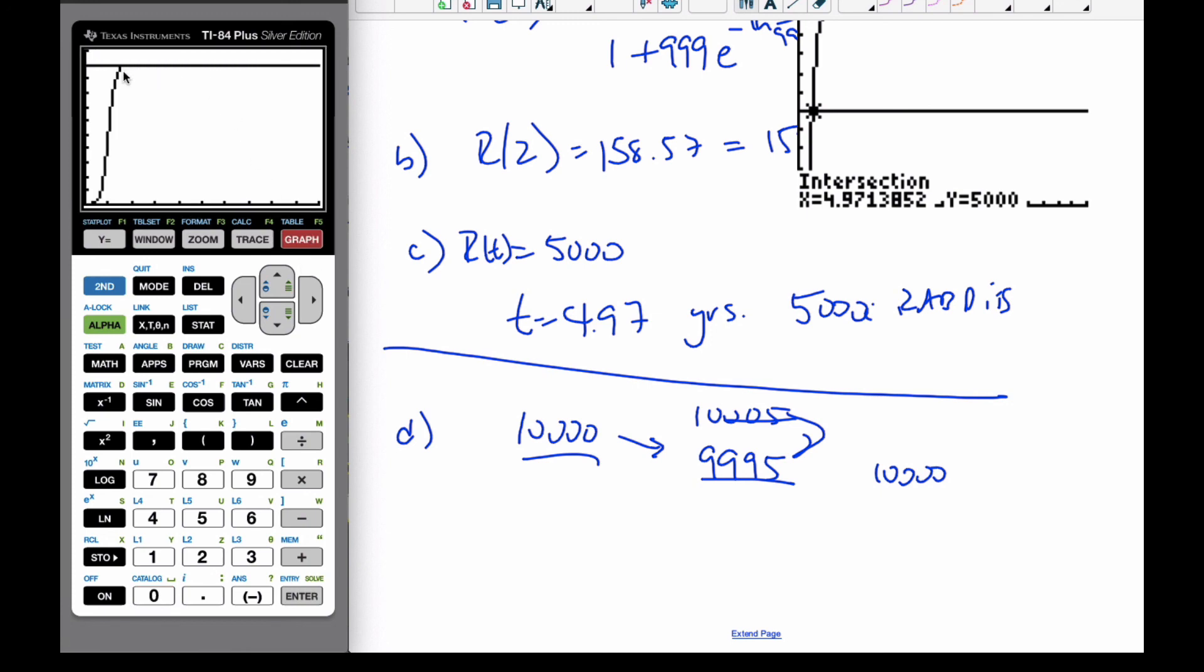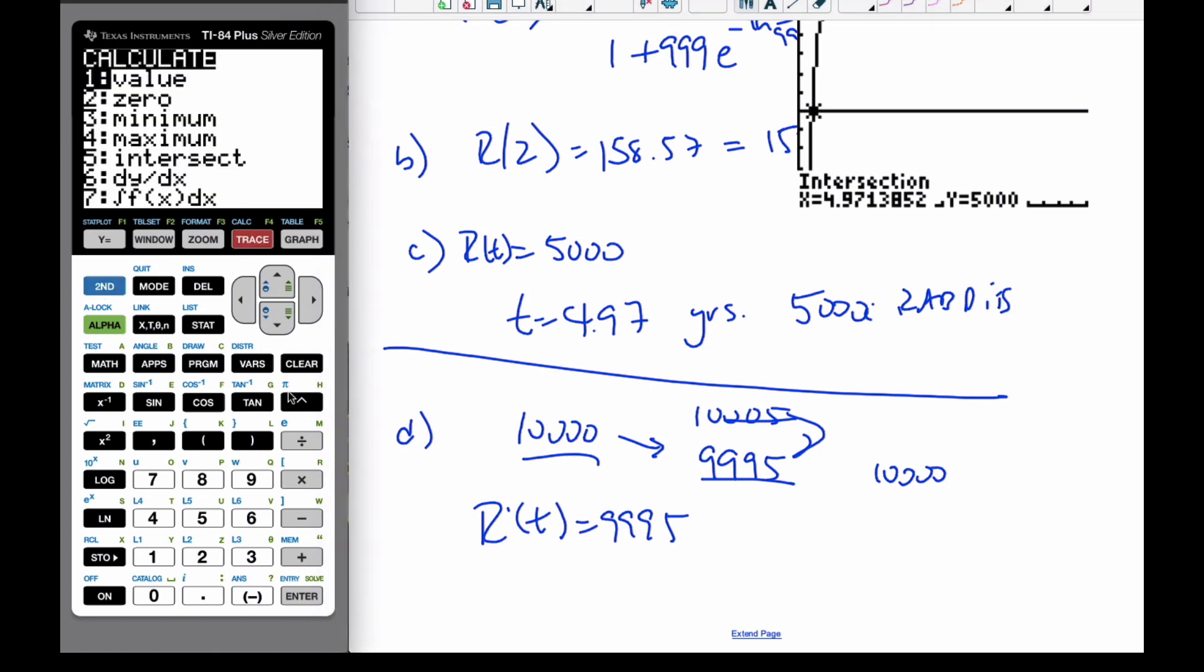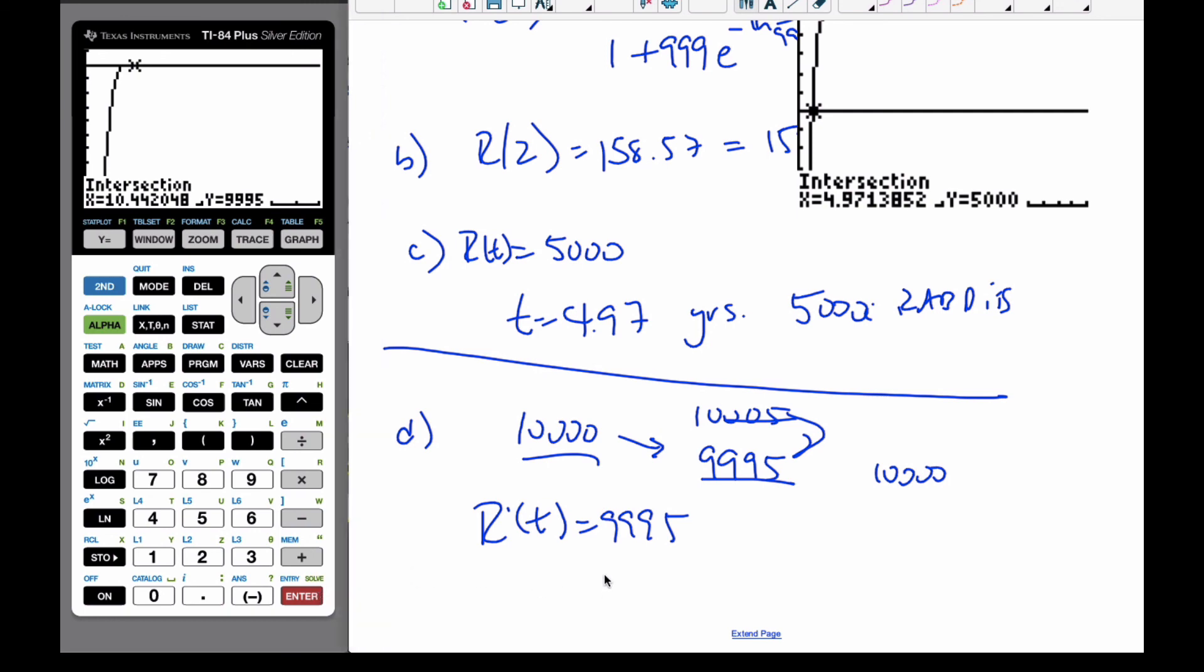And, so, right here, I can't even tell my pixels, they're so small. I want to find when is R at T equal to 9,995. And, so, if I trace and intersect it, I can see that T is equal to 10.44.